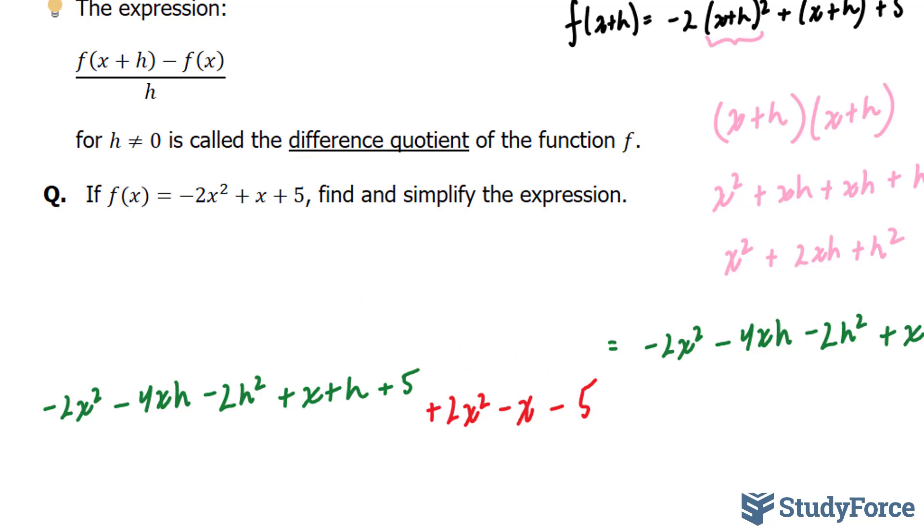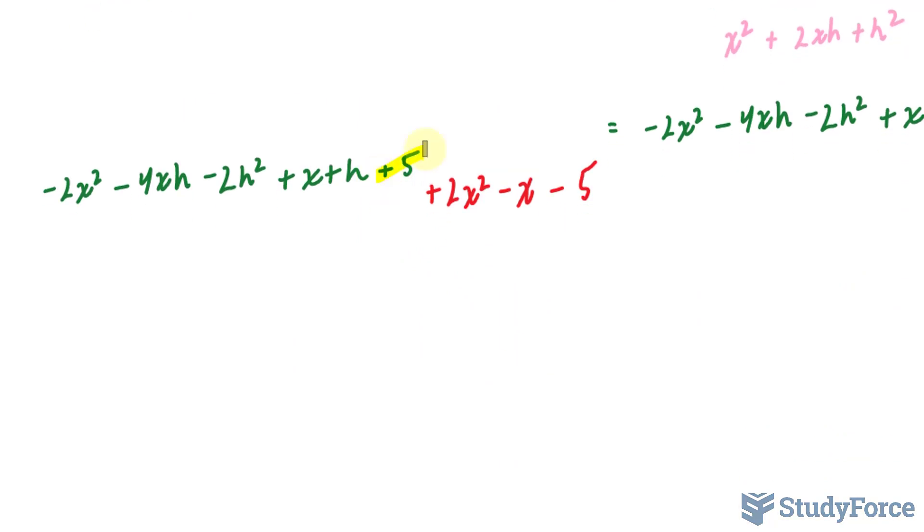Let's see if we can collect like terms. This positive 5 and this negative 5 will cancel out. This x and this x will cancel out. This negative 2x squared and this positive 2x squared will go away.